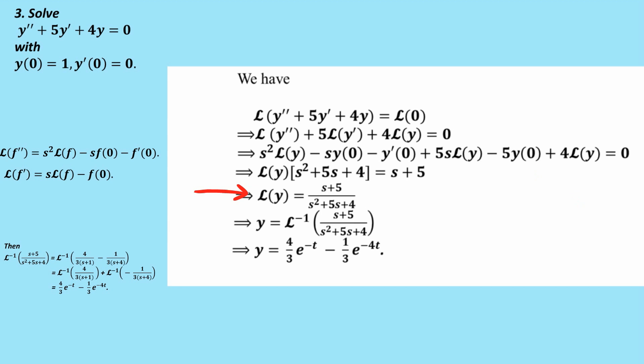Now I take the inverse Laplace transform of both sides. If you like, I get y equals the inverse Laplace transform of this fraction. And that's exactly what we worked out in question 2. So we can just put in the solution. y equals 4 thirds e to the negative t minus 1 third e to the negative 4t.